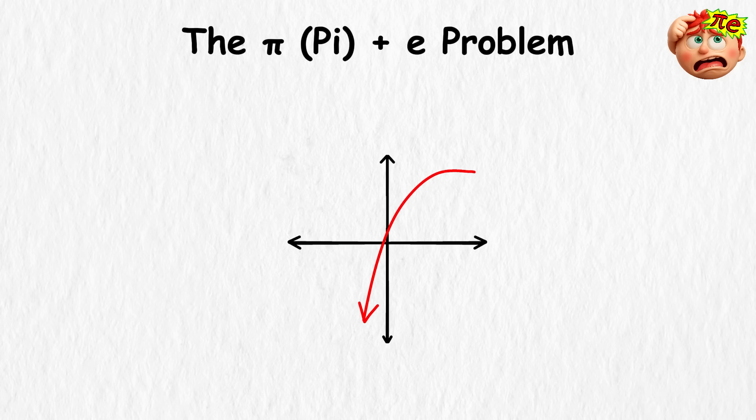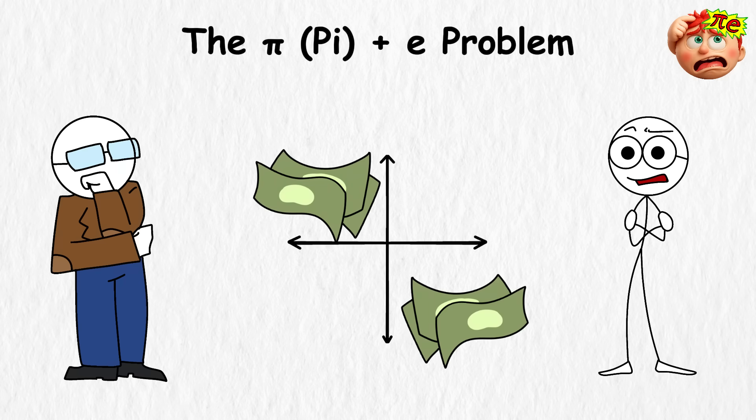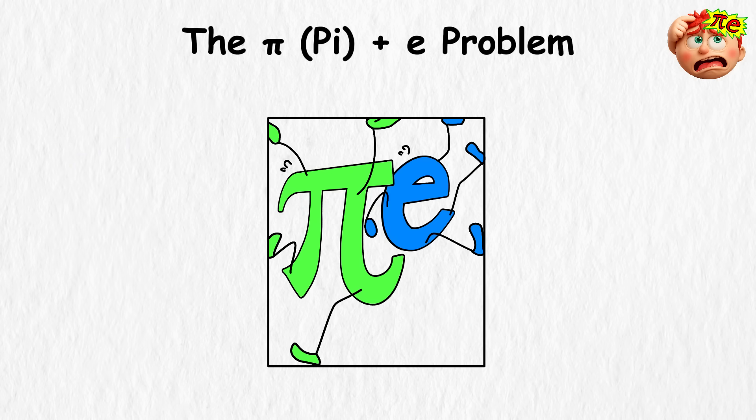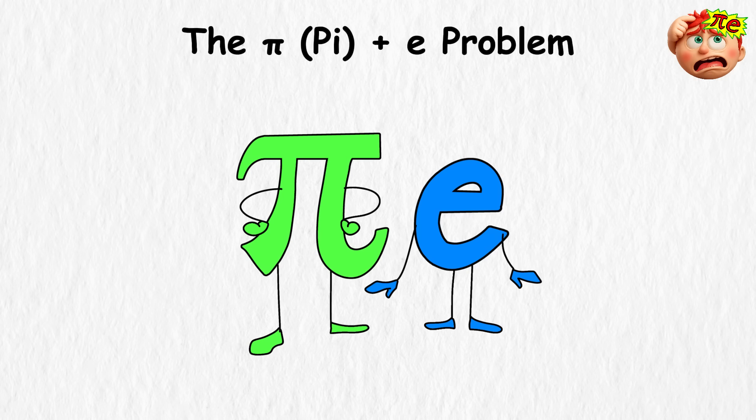E is more hidden, but just as important. It pops up in growth, decay, and compound interest. Both are unusual because they're what mathematicians call transcendental numbers, meaning you can't trap them inside any neat little equation. They go on forever, and they don't fit into math's usual patterns. With numbers this famous, you'd expect we'd know everything about them by now. But here's the surprise. We don't even know what happens when you add them together.